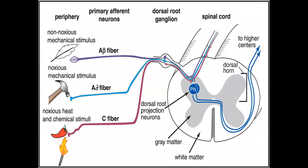The peripheral afferent neurons can also be stimulated by non-noxious mechanical stimuli like feather touch or soft touch, noxious mechanical stimuli like a hammer hit or road traffic accident, or noxious heat or chemical stimuli. These signals move through A-beta fibers, A-delta fibers, and C fibers — all different sensory fiber types — which reach the dorsal root ganglion of the spinal cord and then move toward the brain.